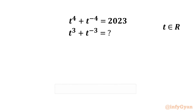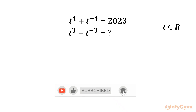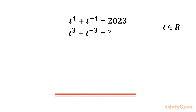Welcome to Infigyan. Today in this video we are going to solve one very interesting question from Math Olympiads. We have to evaluate the expression t³ + t⁻³, given that t⁴ + t⁻⁴ = 2023, where t belongs to real numbers.